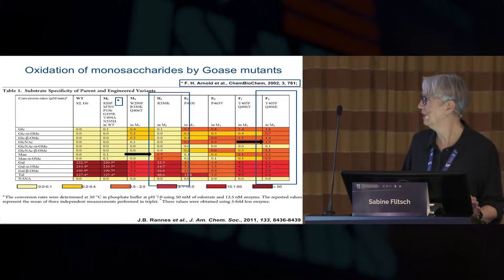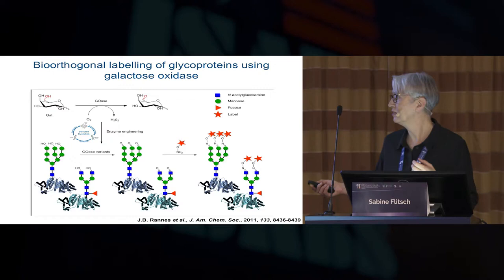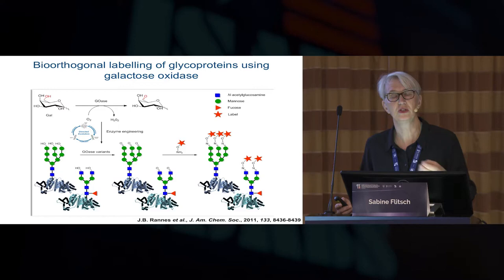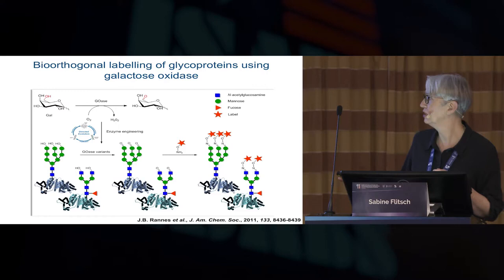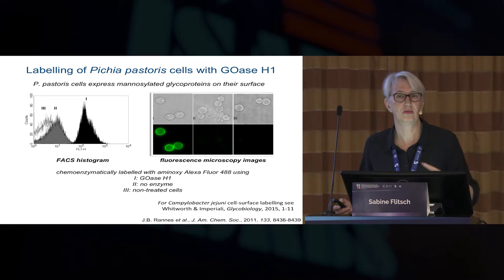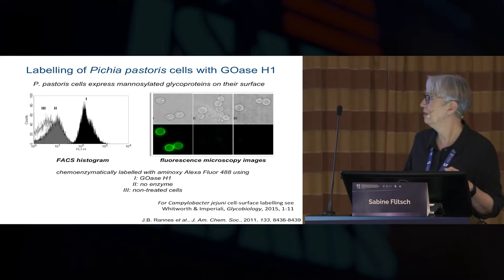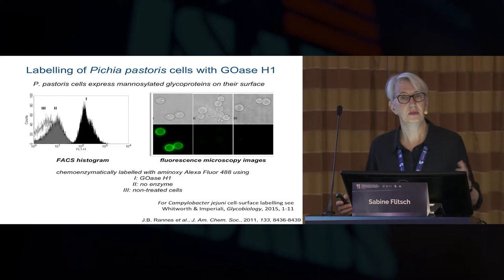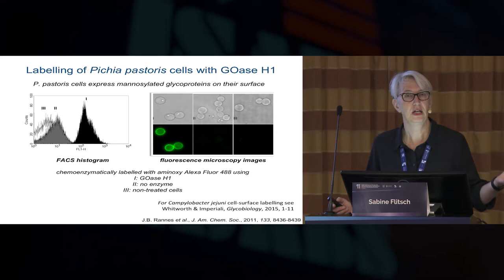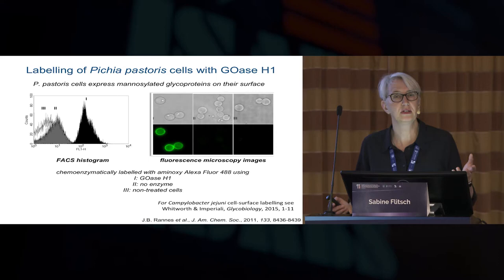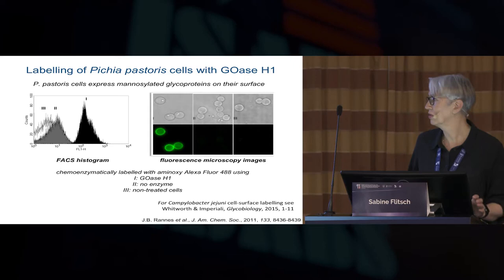So we haven't changed the selectivity from galactose to another sugar yet, but we have broadened it, so you can use it as a much broader enzyme for cell surface sugar labeling. In a context where you have only mannose or only N-acetylglucosamine, we asked whether these mutants are now good enough for efficient, detectable cell surface labeling and labeling on proteins. We demonstrated on proteins and also on yeast cells — yeast cells have a lot of mannose and don't have galactose on their surface — and the H1 mutant was able to label mannose on yeast cells with good selectivity. You can put a fluorescent label or biotin on, making it a really nice orthogonal method to existing methods.